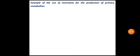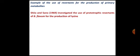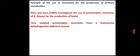The example of the use of revertent mutants for the production of primary metabolites: Japanese scientists investigated the use of prototropic revertents of Brevibacterium flavum for the production of lysine. We will study this example where revertents of Brevibacterium flavum are the overproducers of lysine amino acid. The isolated prototropic revertents are from homoserine dehydrogenase deficient mutants — this is very important.